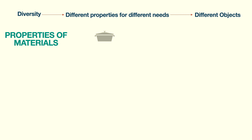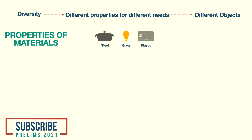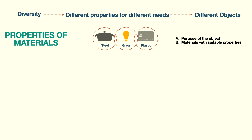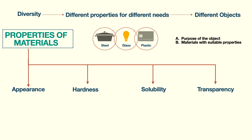For example, for cooking, we will need a material that is strong enough to contain the contents and withstand high temperatures as well, such as steel, aluminium, etc. So for making any object, one needs to first identify the purpose of the object and secondly, choose a suitable material with the desired qualities. Therefore, the study of various properties of materials becomes critically important. This chapter outlines four properties of materials: appearance, hardness, solubility, and transparency.